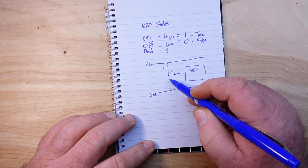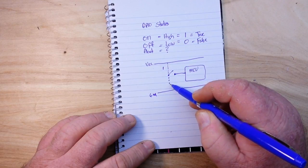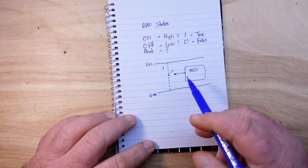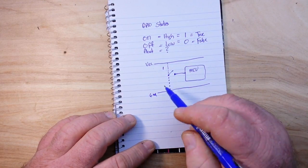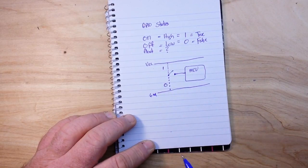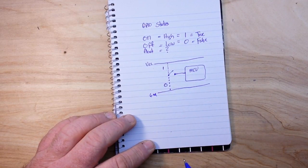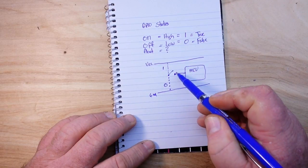And if we run this end of the switch to ground, then when we press the switch we get the logical zero or the low. But what happens in this state where the switch is disconnected?